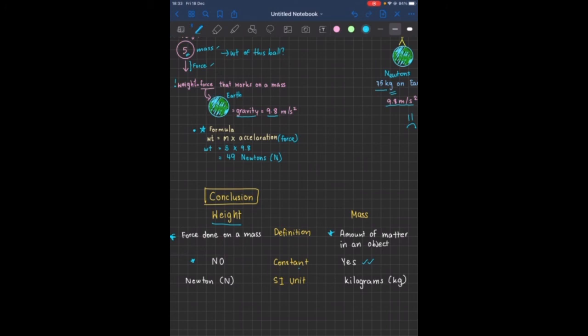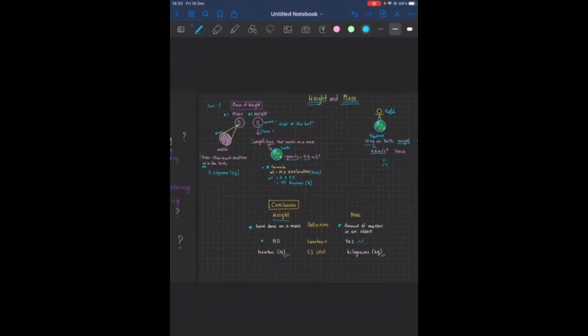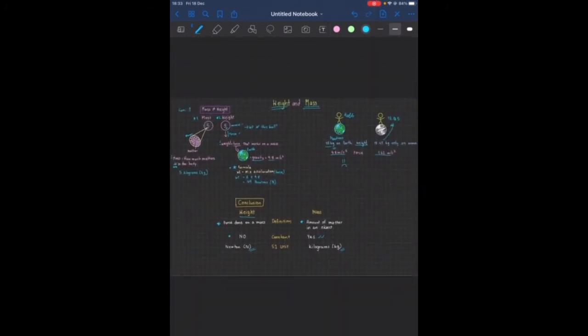And the SI unit for weight is newtons. While mass is kilograms. So I hope you guys understand the difference between weight and mass. If you have any questions, please comment down below. And yeah, try doing our exercises too. Good luck, bye-bye.